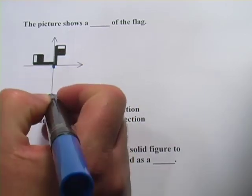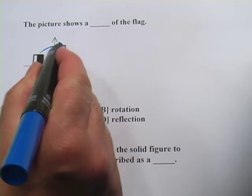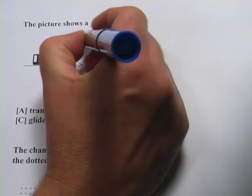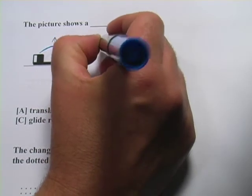If you put your finger down right there and then pulled it up, spun it up here, rotated it around that origin, you would get that shape. So this is a rotation.